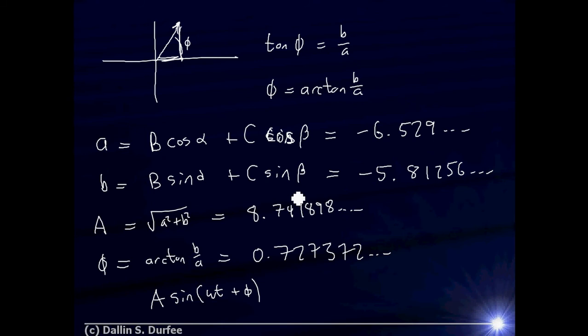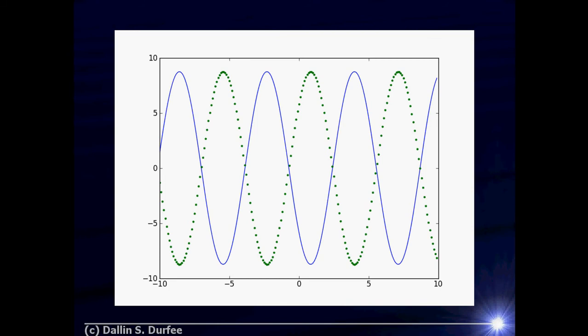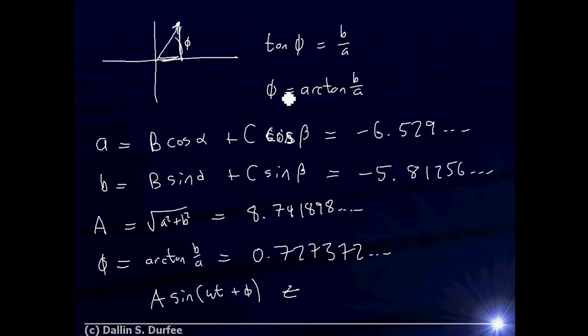There aren't really units to check, but I can actually verify this answer because I know what I'm supposed to get — the sum of those two sine waves. I can go into Mathematica, Python, or MATLAB, plot the sum of those two sine waves, and then plot my result and see if they match. The blue line is the Python sum and the green is what I get using my complex exponential amplitude and phase. They don't line up — there's a problem. Both the real and imaginary parts were negative, meaning A-tilde is in the third quadrant. But the angle 0.72 is in the first quadrant, between 0 and pi/2.